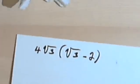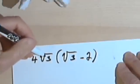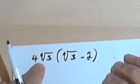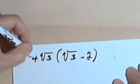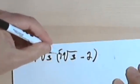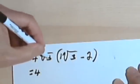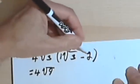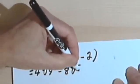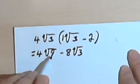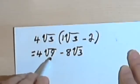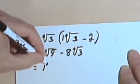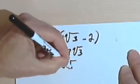Here's some more problems. I've got 4 times the square root of 3, and that's going to multiply the expression the square root of 3 minus 2. I'm basically just distributing this 4 times the square root of 3. So 4 times the coefficient here, which is 1, gives me 4. And the square root of 3 times the square root of 3 gives me the square root of 9. Then I multiply 4 times the square root of 3 times negative 2, giving me negative 8 times the square root of 3. The square root of 9 is 3, so 4 times 3 is 12. That gives me 12 minus 8 times the square root of 3.